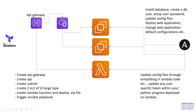Terraform is the starting point for setting up a cloud environment. Then you use Ansible to perform actions like installing a database, creating a DB user, setting up user passwords, updating config files, deploying web applications, changing web application paths or default configuration, or triggering email notifications. For Lambda, once it is created and API Gateway is integrated, you can use Ansible to change files or configuration within the Python program deployed over Lambda, since Ansible provides strong functionality for configuration management and templating.